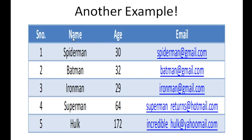To understand data types, let's concentrate on the name field. The data type of the first value, Spider-Man, is characters — it's a string of characters. Batman is also a string of characters, Iron Man, Superman, Hulk — all these are character values, string values made up of characters.